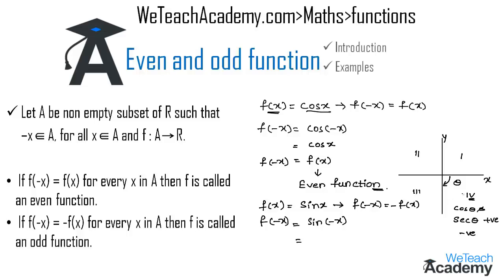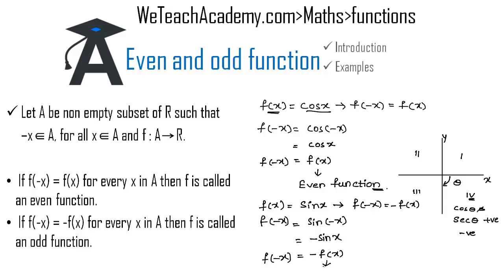Since theta lies in the fourth quadrant, and except cos θ and sec θ all other trigonometric ratios are negative, we get sin(−x) = −sin x. Since sin x is f(x), we have f(−x) = −f(x). Therefore f(x) = sin x is an odd function, satisfying the condition f(−x) = −f(x).